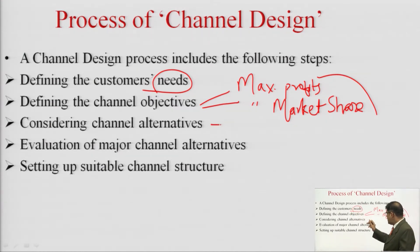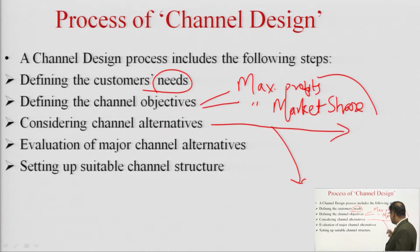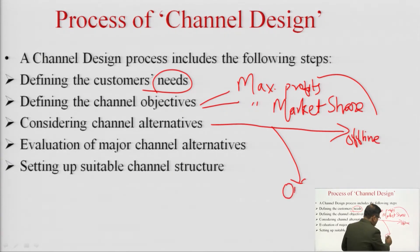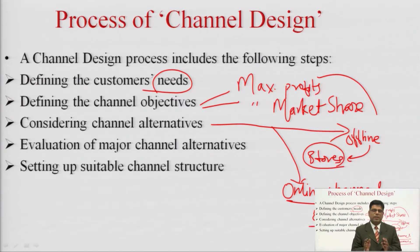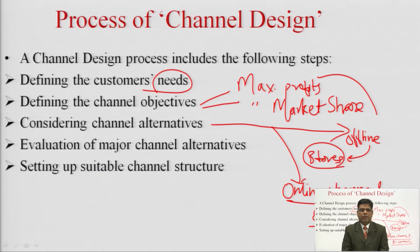Then there are certain alternatives which are taken into consideration. A simple example: there can be an offline channel and an online channel. If the company goes for an offline channel, it will have to set up stores; if it goes for an online channel, it will have to adopt an e-commerce model. The company has to either go for an offline channel, an online channel, or a mix of both, depending on its financial condition, the nature of the product and market, and what consumers are expecting.